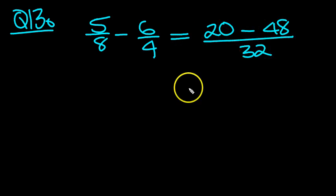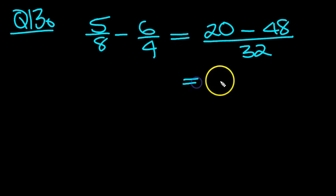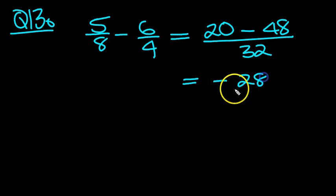20 take 48 is minus 28 — minus 28 rather — over 32.